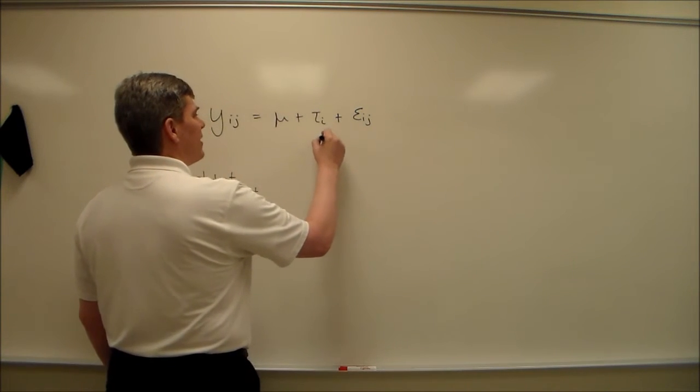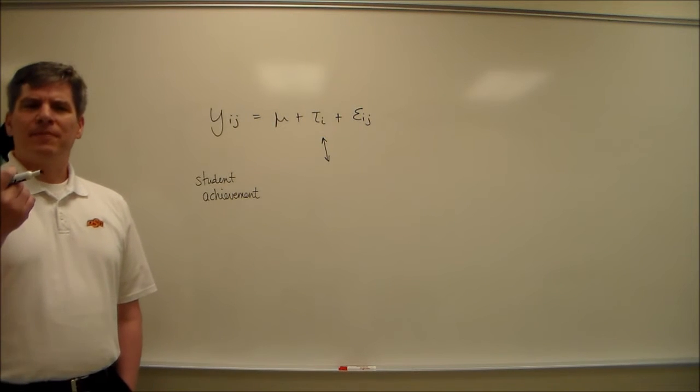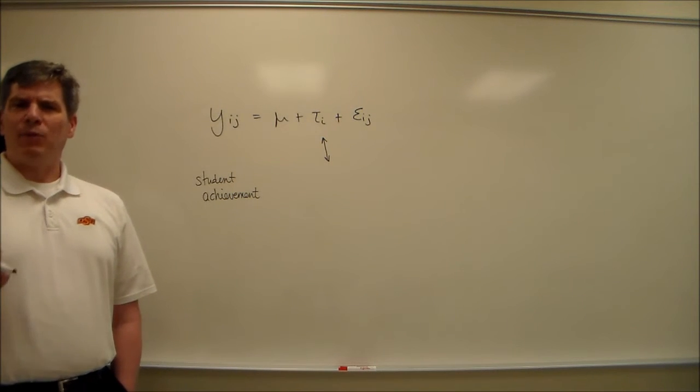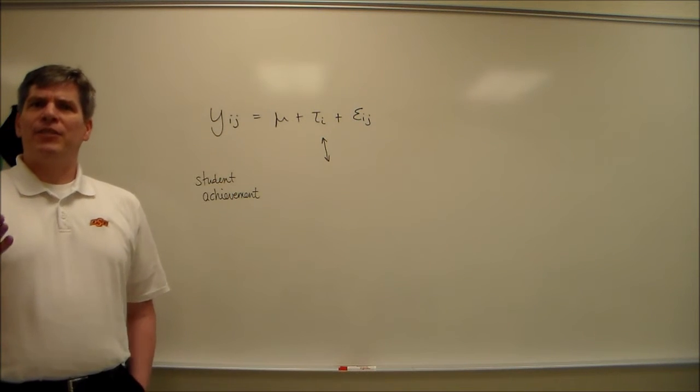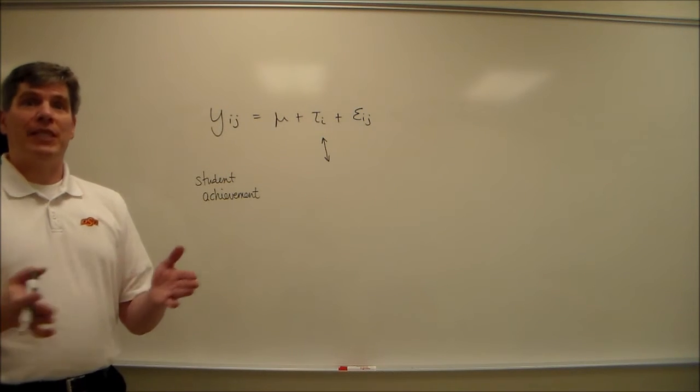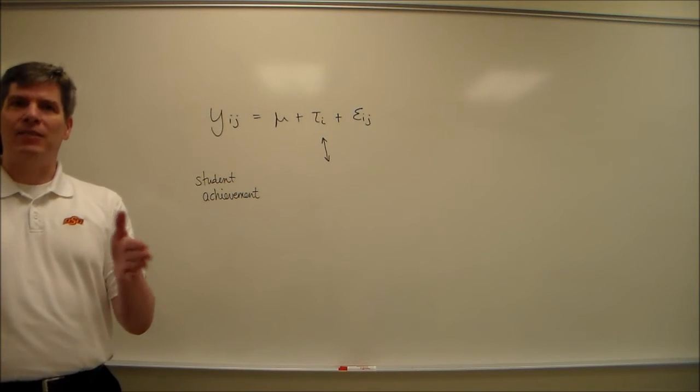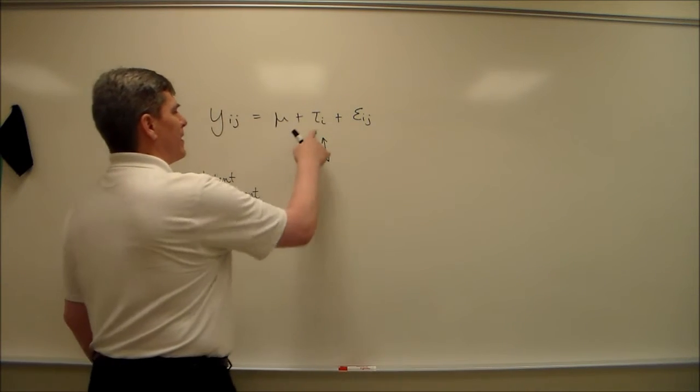And these tau, since these are fixed effects, they have to be levels that we care about, that we want to actually compare. So let's say that there's method A for teaching, and it's a well-known method, and method B for teaching, and another well-known method. And you want to test which of those two methods is preferred. So that would make this a fixed effect.